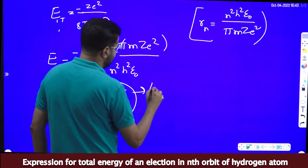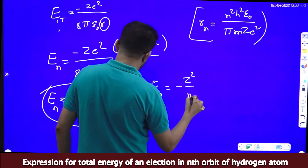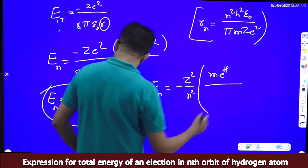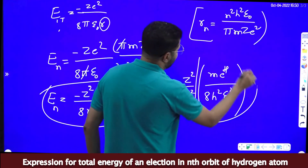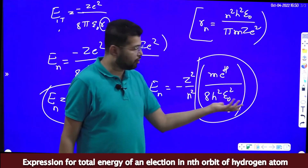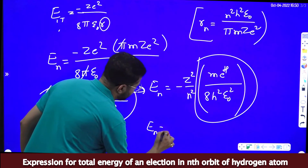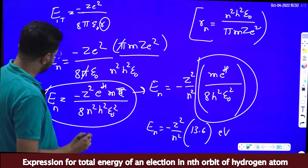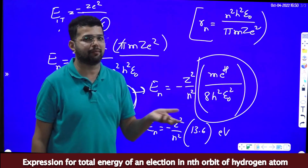Writing it properly: energy in the nth orbit En = −(Z²/n²) × me⁴/(8h²ε₀²). If we substitute the values of m (mass of electron), e (charge of electron), h (Planck's constant), and ε₀, and convert to electron volts, we get En = −(Z²/n²) × 13.6 eV. For board examinations you can stop at the general formula, and for hydrogen atom substitute Z = 1.